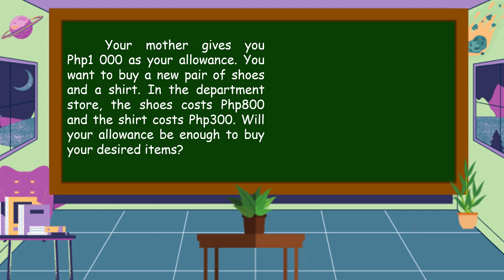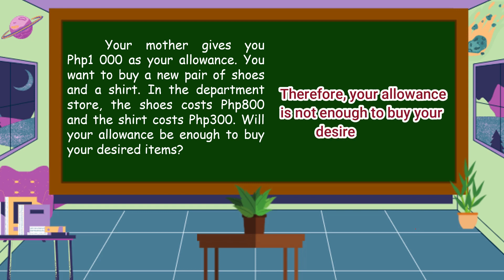To know the answer, we're going to add the shoes cost and the shirt cost. So, 800 pesos plus 300 pesos is equal to 1,100 pesos. Therefore, your allowance is not enough to buy your desired items.